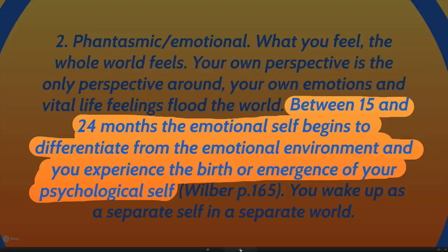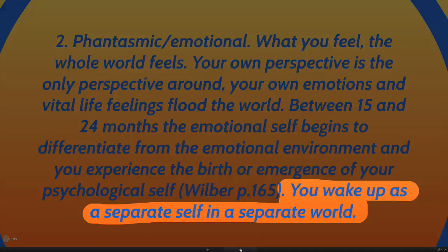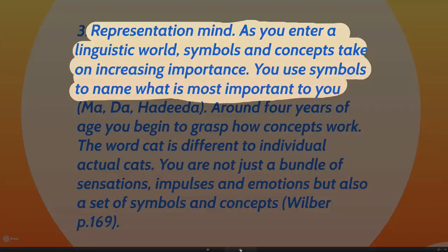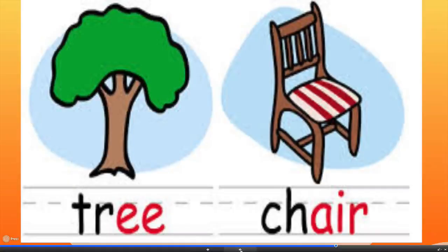Between 15 and 24 months, you begin to get a grasp on your emotional self. You begin to get a sense that your emotional world is your own world and it's different to the world out there, and you begin to experience the birth and emergence of your psychological self. You wake up, as Ken Wilber puts it, as a separate self in a separate world. Then around about the age of three, four, five, as you begin to work with language, you begin to develop a representational mind. You enter a linguistic world with symbols and concepts that take on increasing importance, and you use symbols to start to describe the world. Around four years of age, you begin to grasp how concepts work and enter the symbolic world.